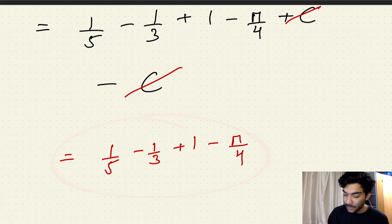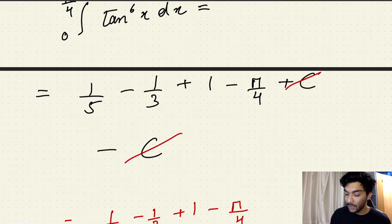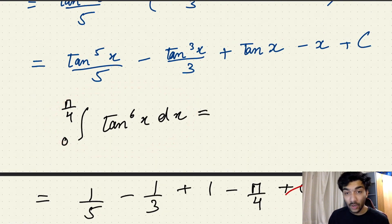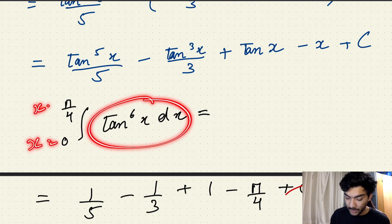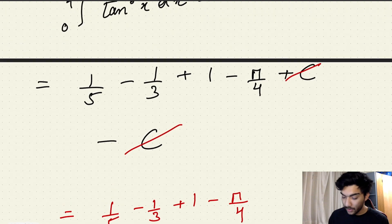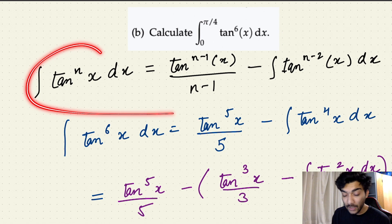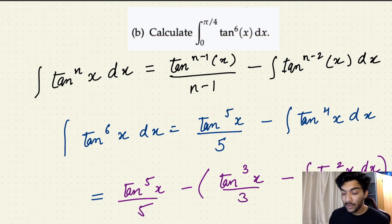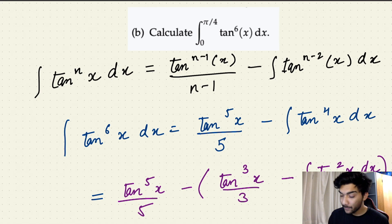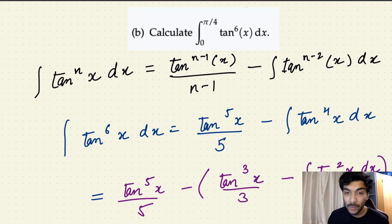You can leave your answer as it is or simplify further. But that is the final answer to the integral of tan to the power 6 of x dx from x equals 0 to x equals pi by 4. The main takeaway from this video is how we can use the reduction formula to simplify indefinite or definite integrals of the form tan to the power nx dx. Feel free to comment if you have any doubts, follow the channel for more videos. Thank you so much for watching — bye-bye, take care.